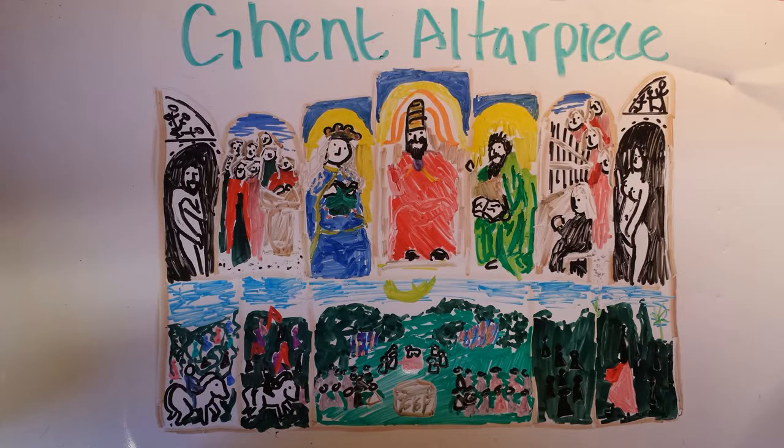The Ghent Altarpiece is one of the most sought-after and most influential pieces of art to date. To many, including Hitler, possessing such a piece symbolized power and prestige. It also holds religious importance in the Catholic Church and led the way for the future of oil painting.